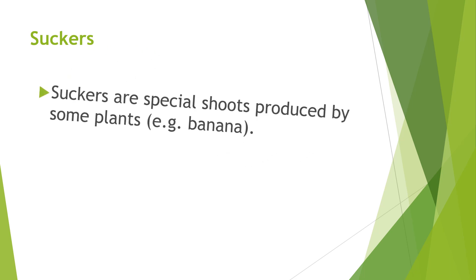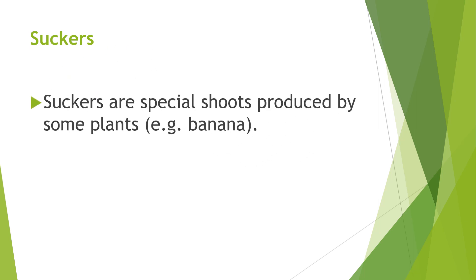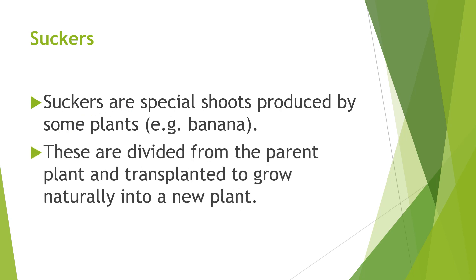Suckers are special shoots produced by some plants, such as banana. These are divided from the parent plant and transplanted to grow naturally into a new plant.